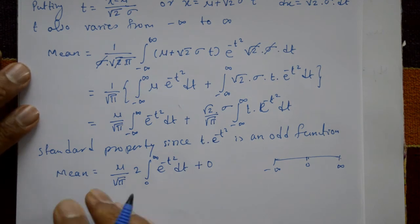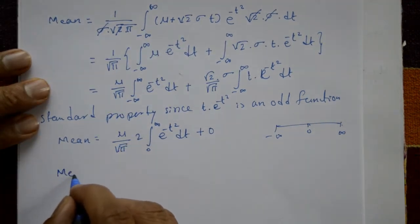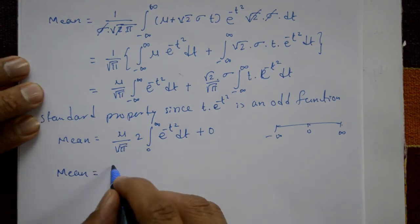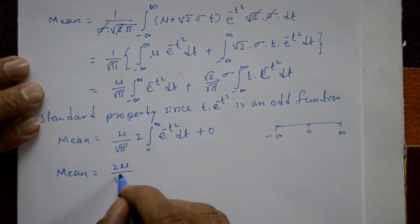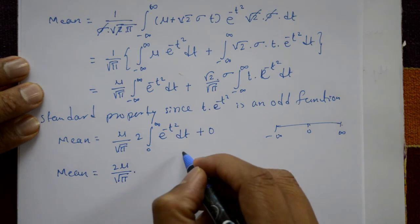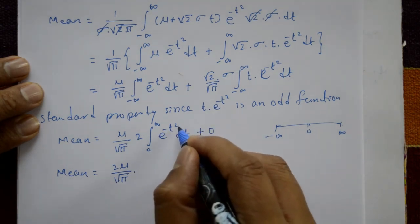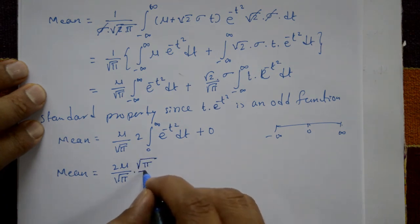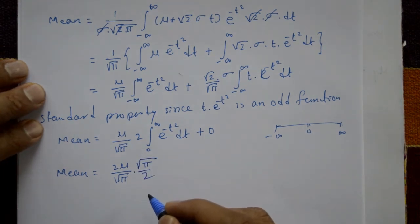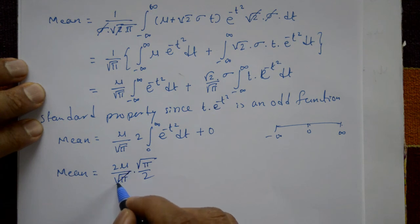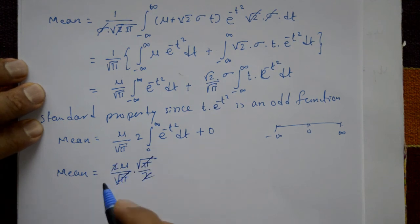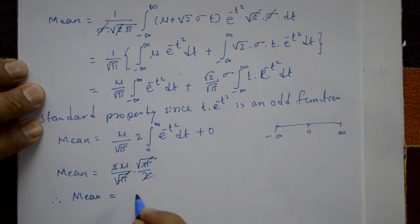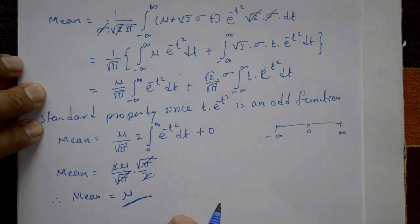Mean equals (2 mu over root pi) times the integral from 0 to infinity of e raised to minus t square dt. This integral equals root pi over 2. So root pi cancels and the 2 cancels, giving us mean equals mu. This is the required mean of the normal distribution.